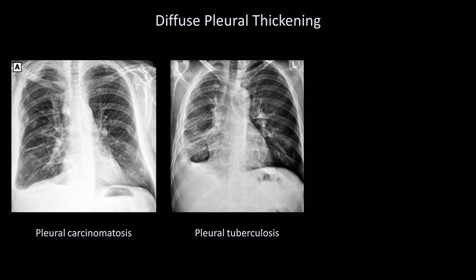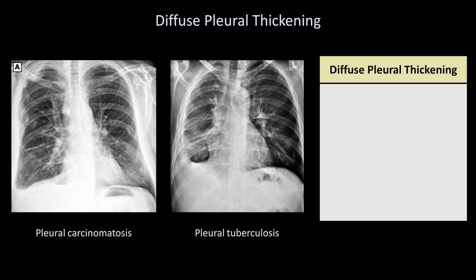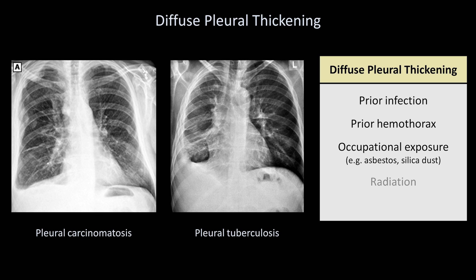Here are two examples of diffuse pleural thickening, which is from a combination of pleural fibrosis and fat deposition. Use of the word diffuse is a little bit of a misnomer, since it does not typically involve all of the pleura on the affected side, though it often obliterates the costophrenic angle. Regarding the differential diagnosis, it is usually a long-term consequence of intense inflammation, seen in various prior infections, a prior hemothorax, occupational exposure, radiation, and malignancy.